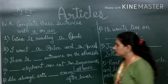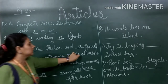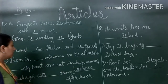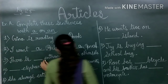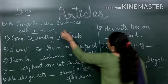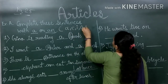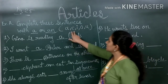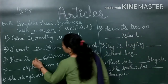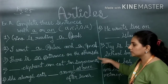The third sentence is: There is blank entrance on the other side. 'Entrance' starts with E. Do you remember — A, E, I, O, U are the vowels. So 'entrance' starts with a vowel sound, and therefore we are going to use 'an'. The answer is: There is an entrance on the other side.